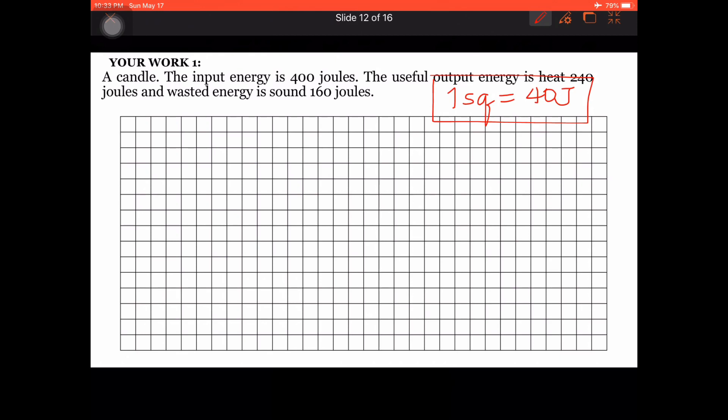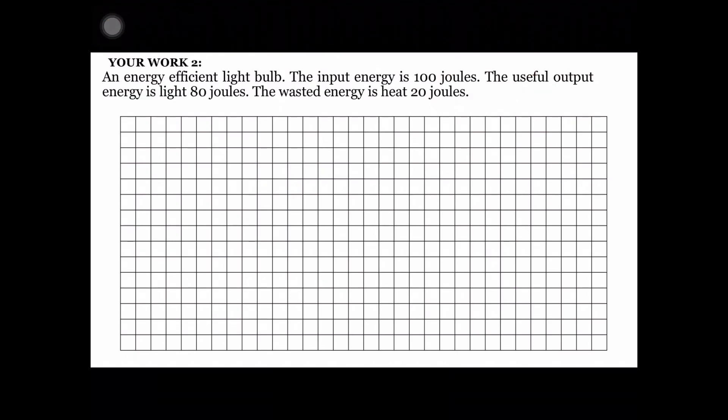Your work number two is an energy efficient light bulb. The input energy is 100 joules, the useful output energy is 80 joules, and the wasted energy is 20 joules. Use the same scale as the example — 1 square equals 10 joules. This one is quite easy.